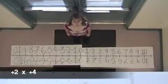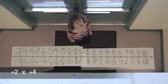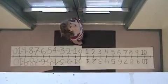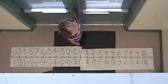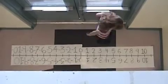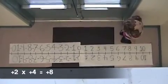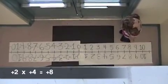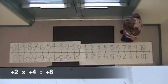Positive 2 times positive 4. The first number tells me to face the positive direction, and the second number tells me to move forward because it's positive. I moved 4 lines 2 times. Now I'm on positive 8, so that's the answer.